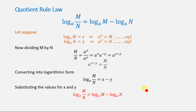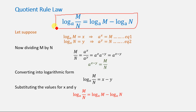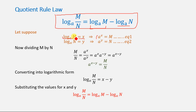The second rule of logarithm, also known as the quotient rule law, states that log base a of m/n equals log base a of m minus log base a of n. Let's suppose again that log base a of m equals x and log base a of n equals y, and now we convert these two equations back to exponential form: a to the power x equals m, and a to the power y equals n.